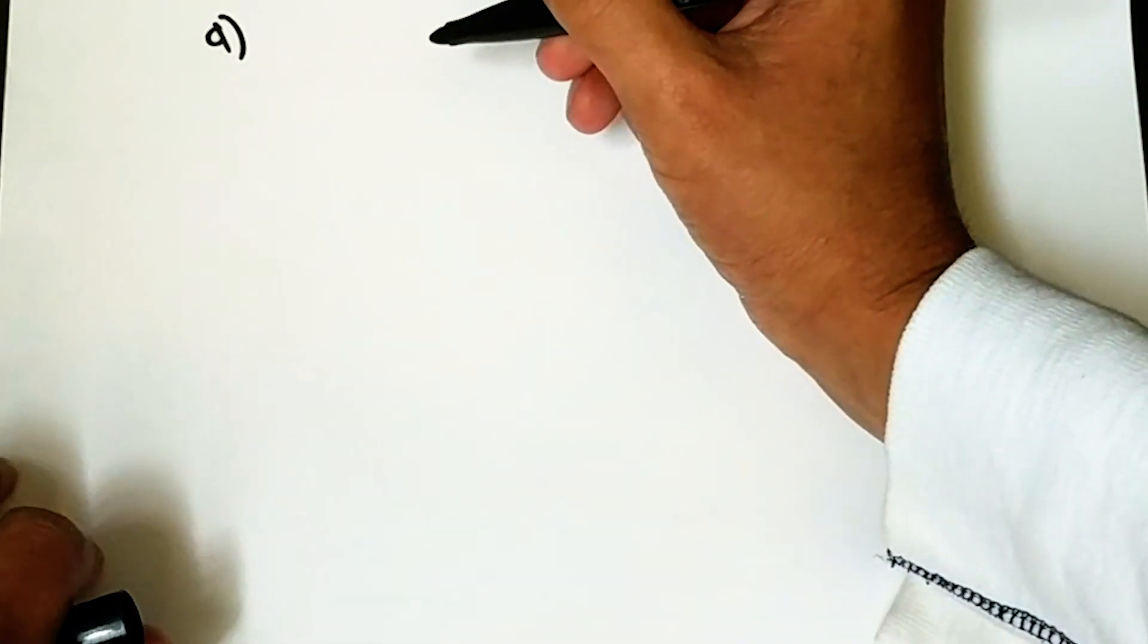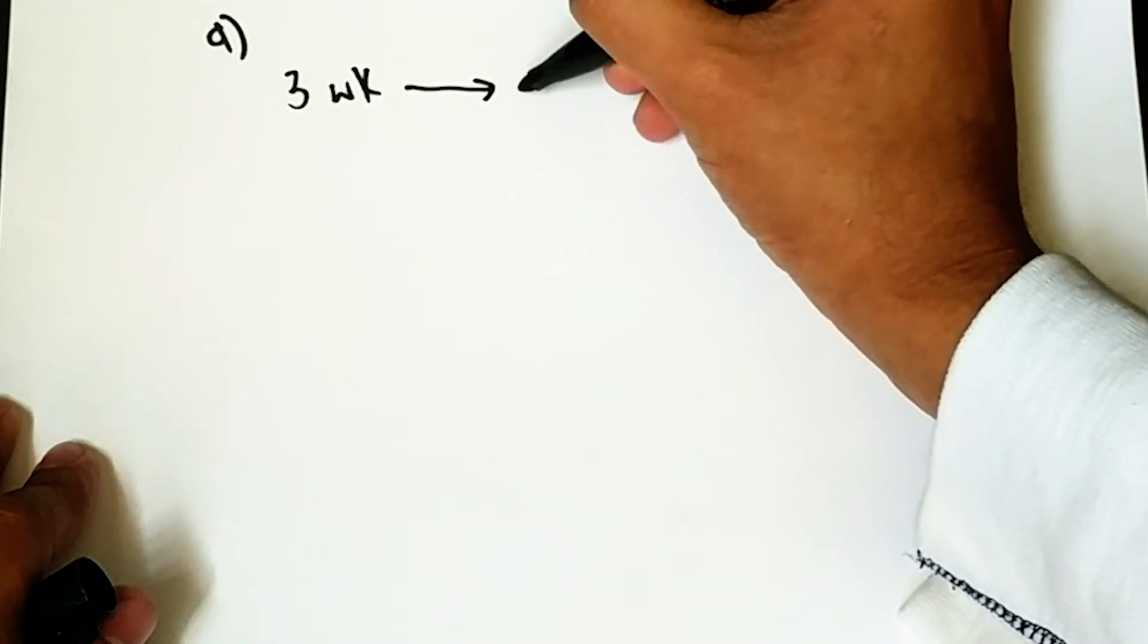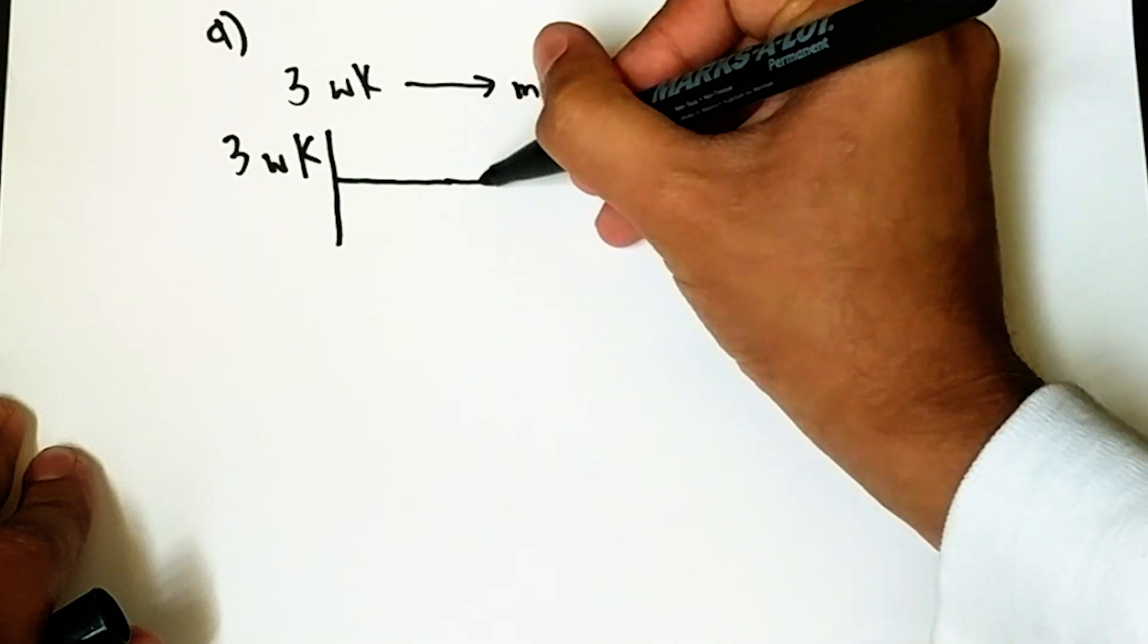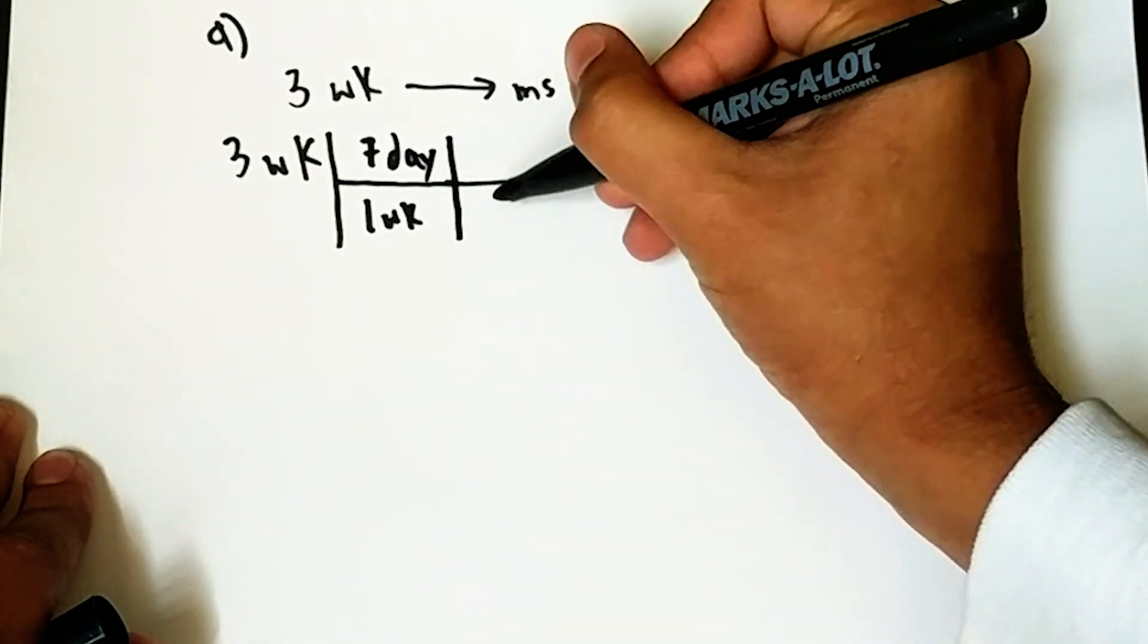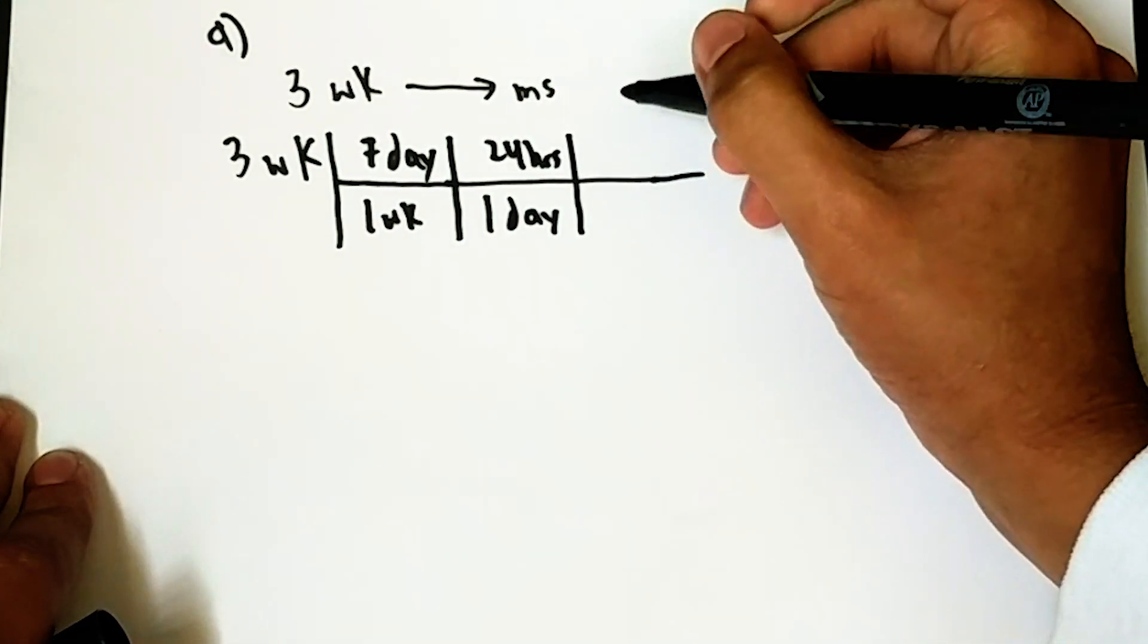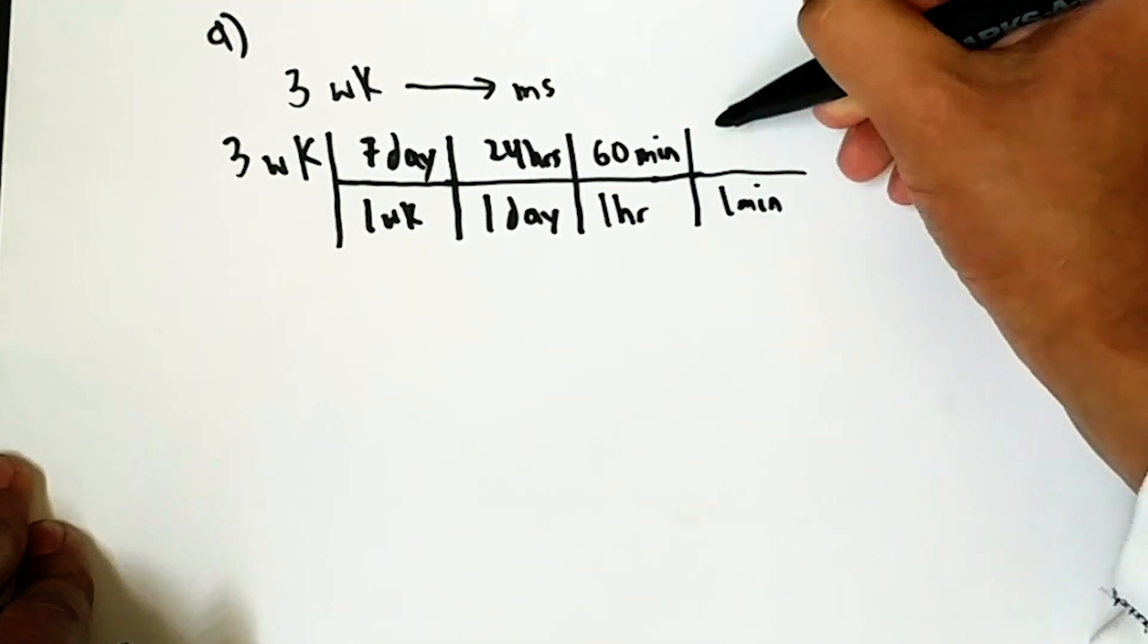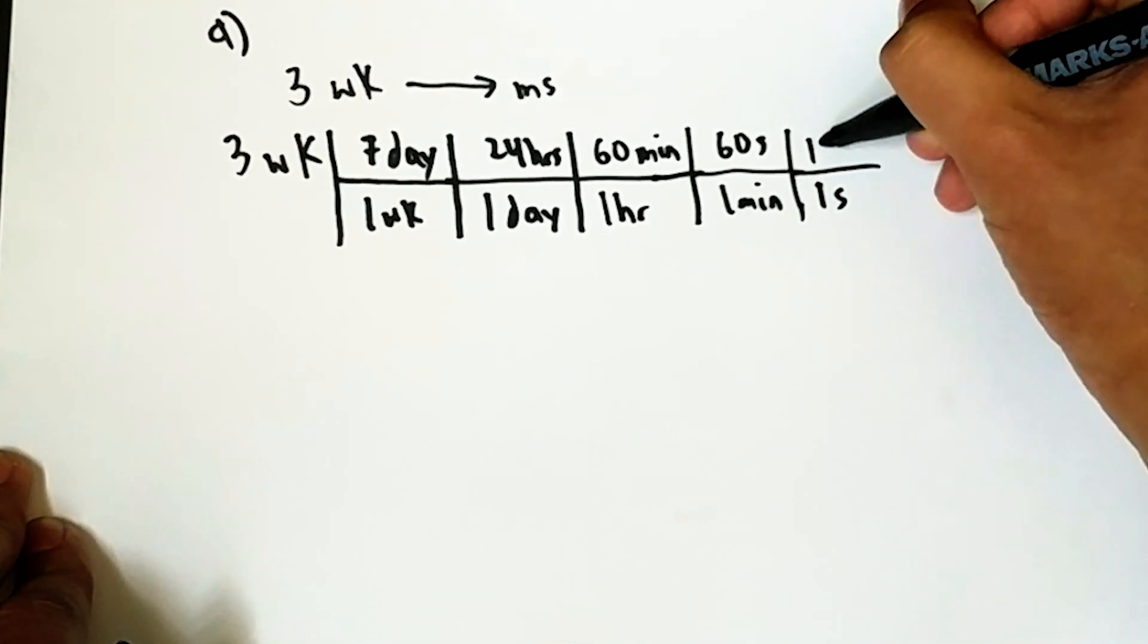All right, y'all, so let's try this again. So, number A, we are tasked to convert three weeks to milliseconds. So, again, we're going to just do the same exact thing, but now just on pen and paper, tell me what you like more. So, three weeks is going to be converting. One week is seven days. One day is 24 hours. One hour is 60 minutes. One minute is 60 seconds. And finally, one second is 1,000 milliseconds.